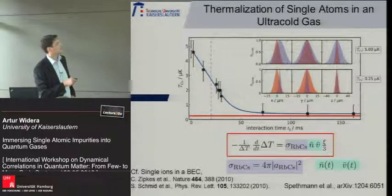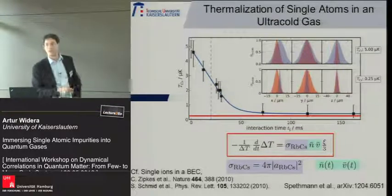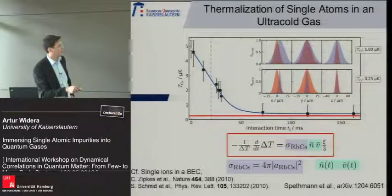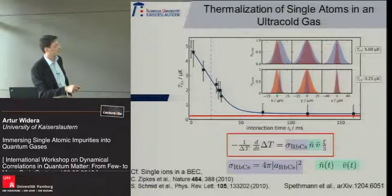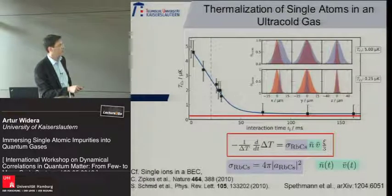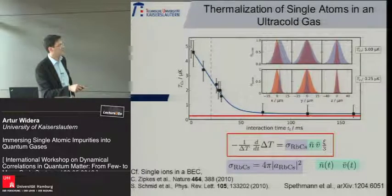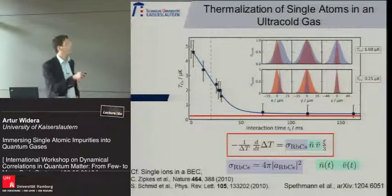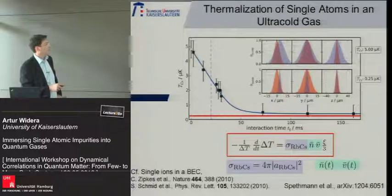A nice feature of single atoms is that we can track the thermalization curve at every point. In large systems, it's only possible to track this after the two subsystems have already equilibrated. We can extract information about the interaction by looking at the equilibration dynamics, assigning the system a constant cross-section given by the scattering length, and making the density and relative velocity time-dependent to calculate the full thermalization distribution.